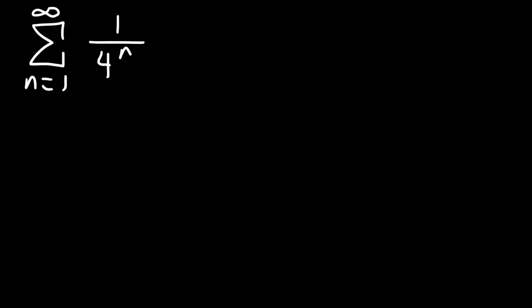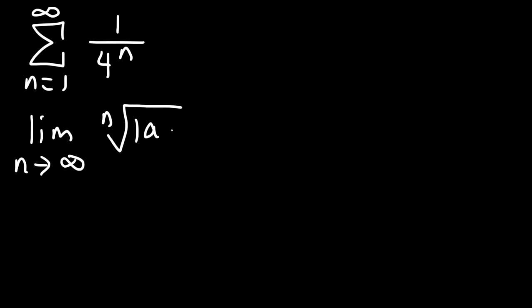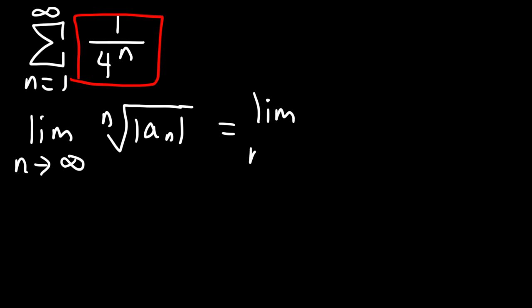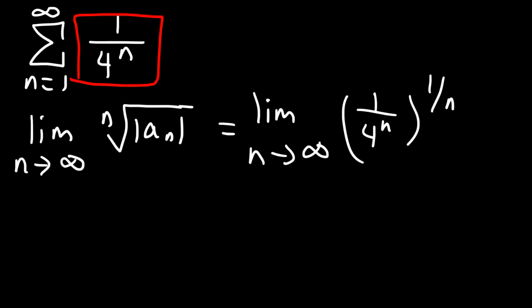Let's work on some examples. Let's say we have the series from 1 to infinity of 1 divided by 4 raised to the n. Use the root test to determine if the series converges or diverges. We take the limit as n goes to infinity of the nth root of the absolute value of a sub n, where a sub n is 1 over 4 to the n. This is the same as raising a sub n to the 1 over n.